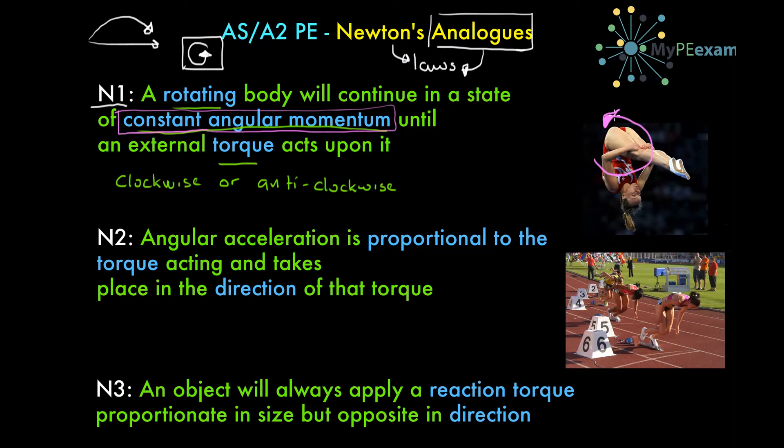doing a pike somersault in this direction. We would describe that direction as anti-clockwise. What we're saying is that until an external torque acts upon the performer, they're going to continue in a state of constant angular momentum. We call this the law of conservation,